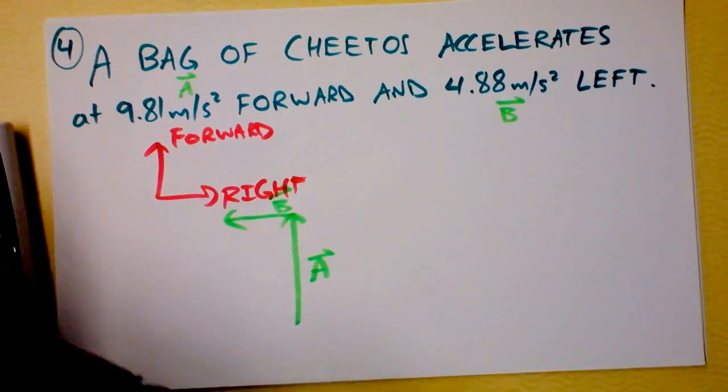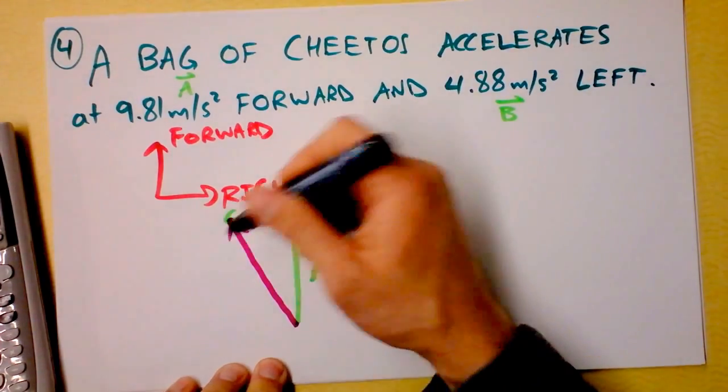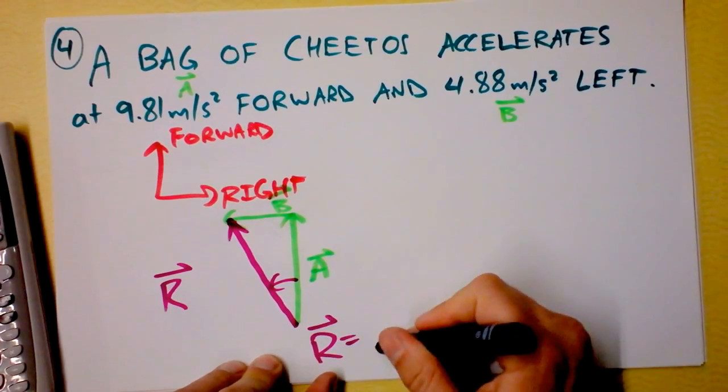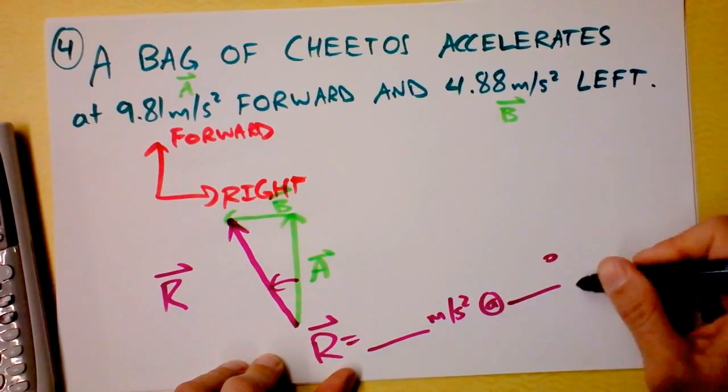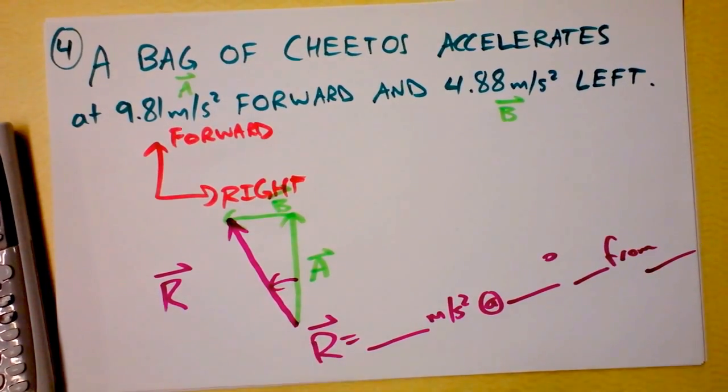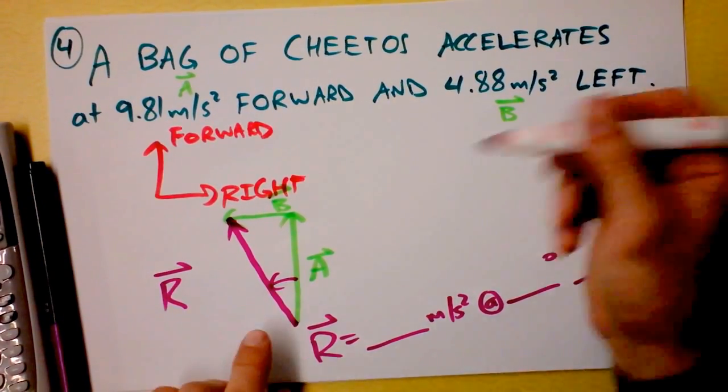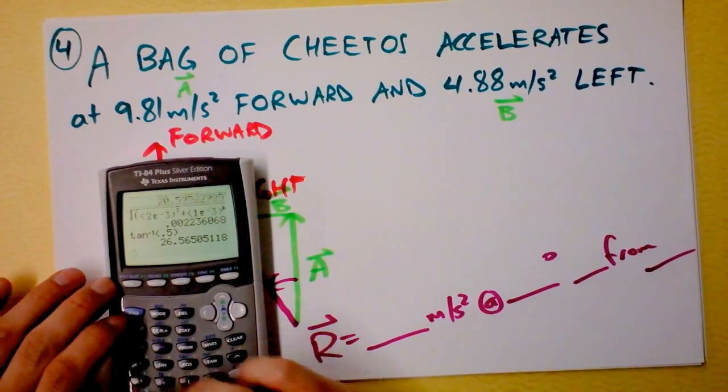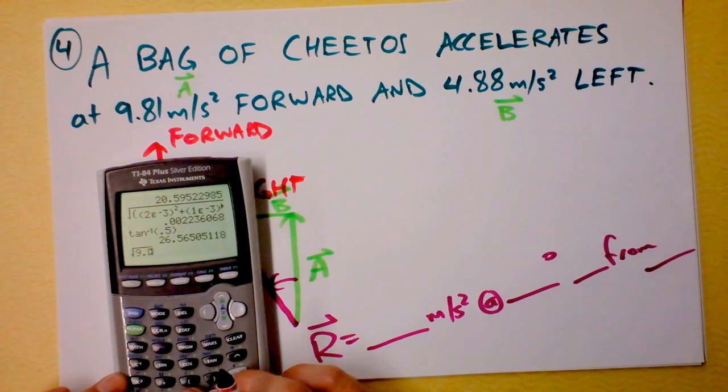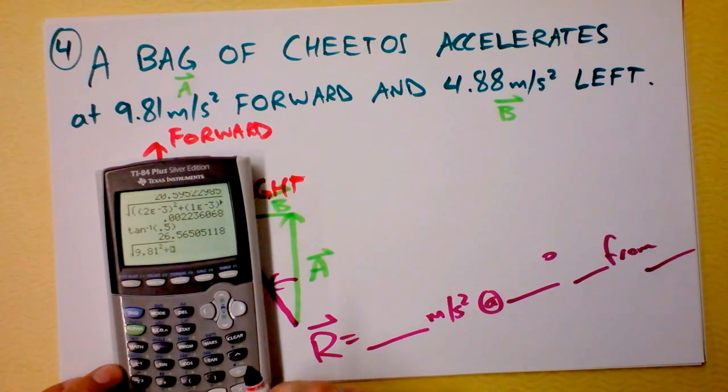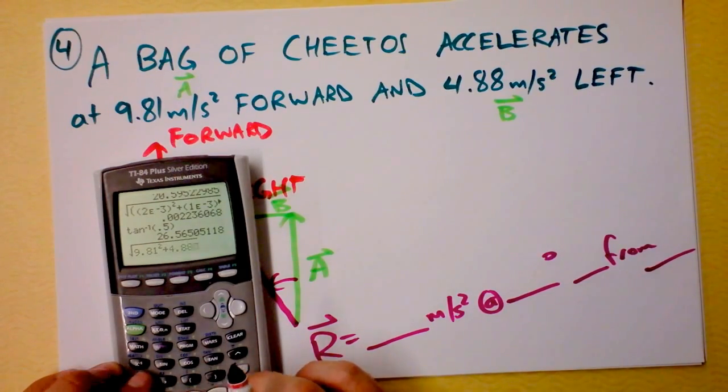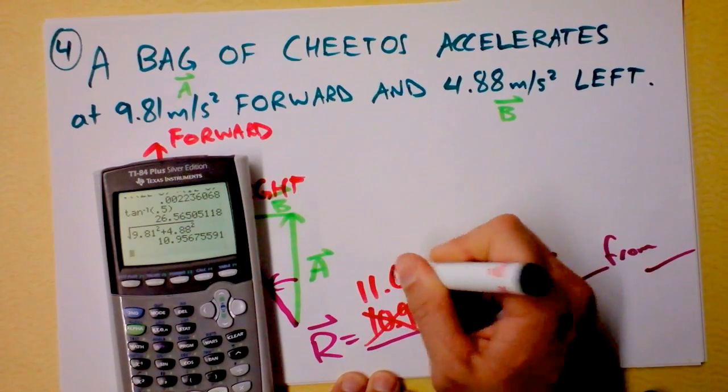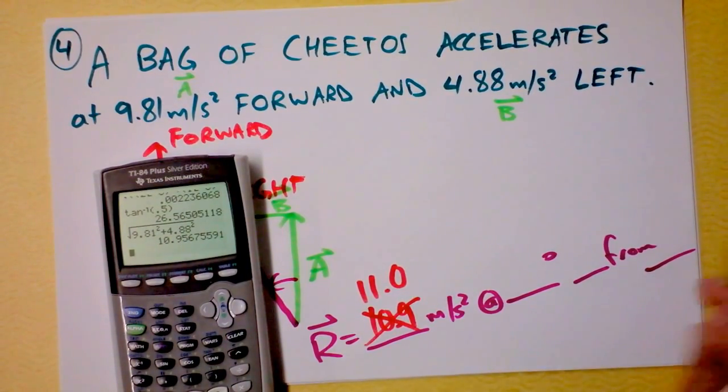And the resultant, as always, is starting where the first one begins, and going where the last one ends. And there's R right there. You found it. Now tell me everything about it. R is blah blah blah meters per second squared at what angle from what? What from what? Let's do it. You want to find out what that hypotenuse is? This guy right here, the length of R? Well, it's simply going to be the square root of 9.81 squared plus 4.88 squared equals... It looks like 10.9... It's 11.1! Gotcha! Sig figs! Careful!